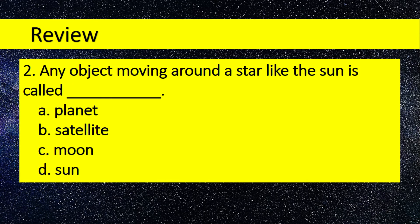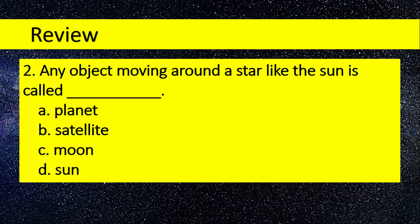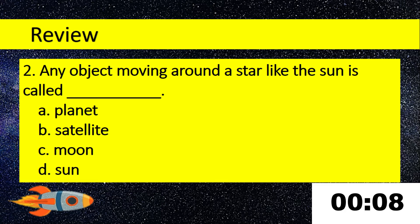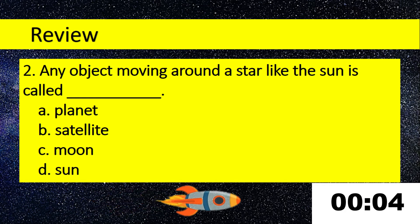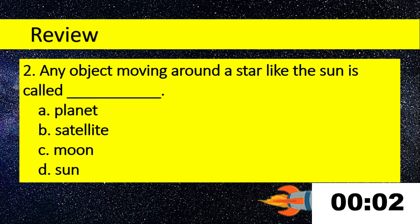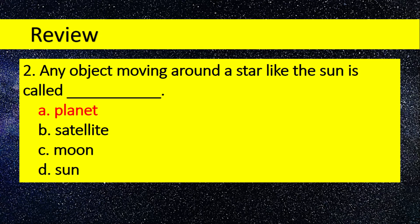Number 2. Any object moving around a star like the Sun is called blank. A. Planet, B. Satellite, C. Moon, D. Sun. Answer: Planet.